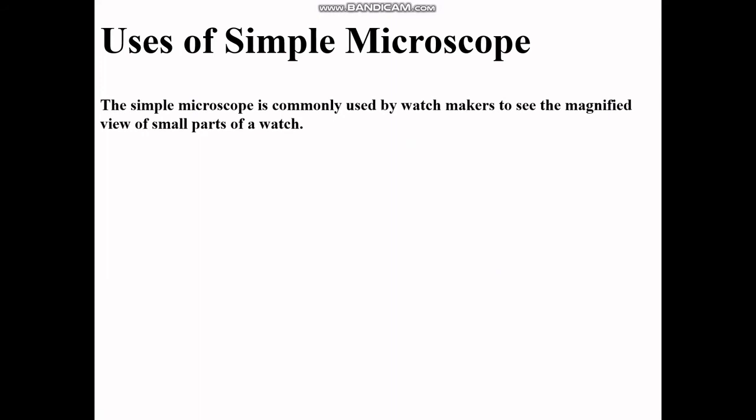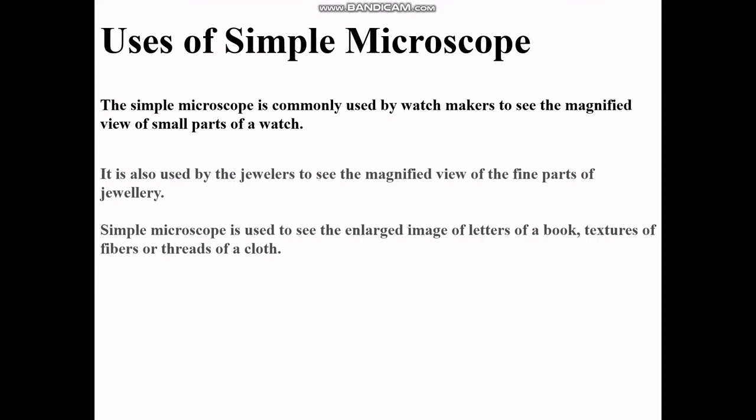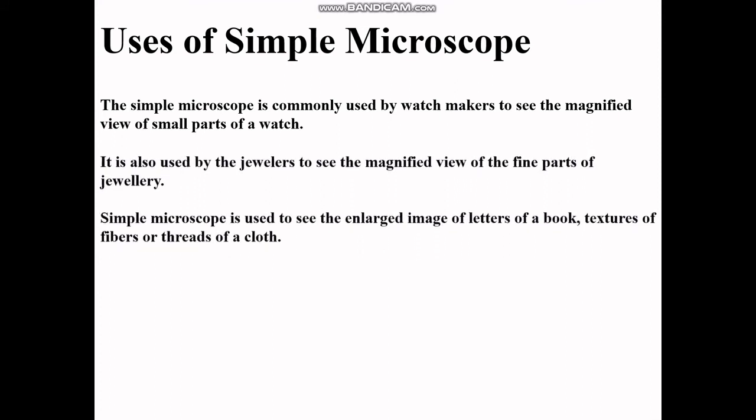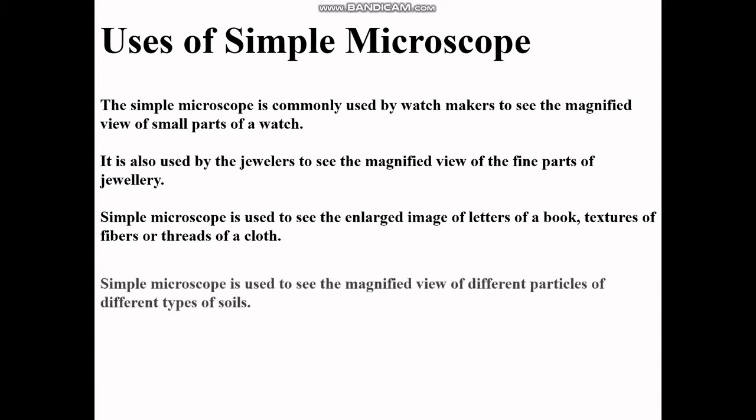Uses of simple microscope. The simple microscope is commonly used by watchmakers to see the magnified view of small parts of a watch, used by jewelers to see magnified view of fine parts of jewelry, to see enlarged images of letters of books, textures of fibers or threads of a cloth.